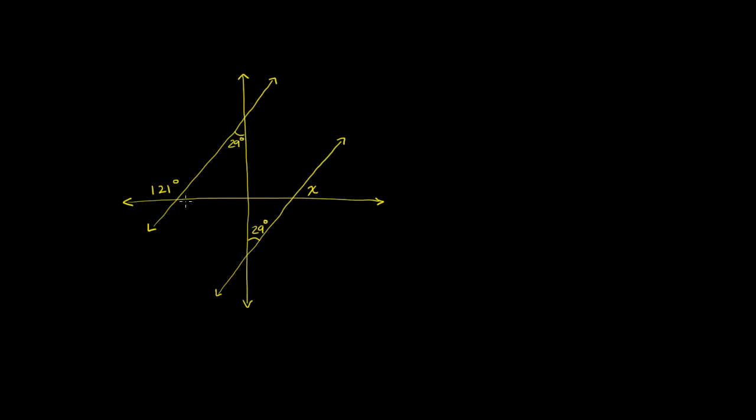We're given a bunch of lines here that intersect in all different ways and form triangles. We've been given the measures of some of the angles: this angle, that angle, and that angle. What we want to do in this video is figure out what the measure of this angle is, and we're going to call that measure x. I encourage you to pause the video right now and try it yourself.